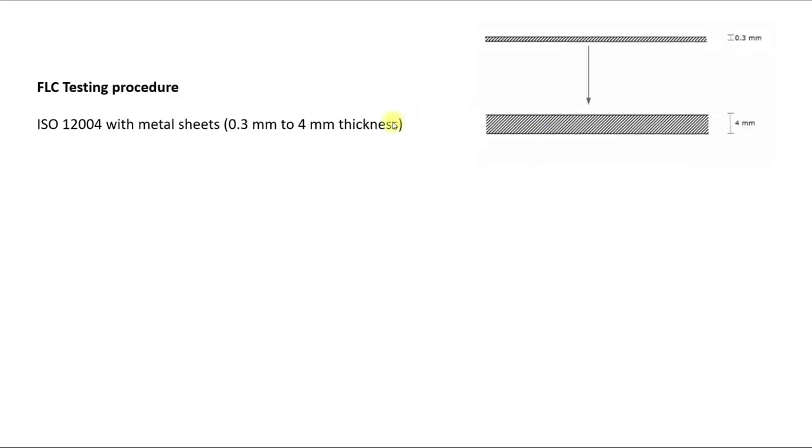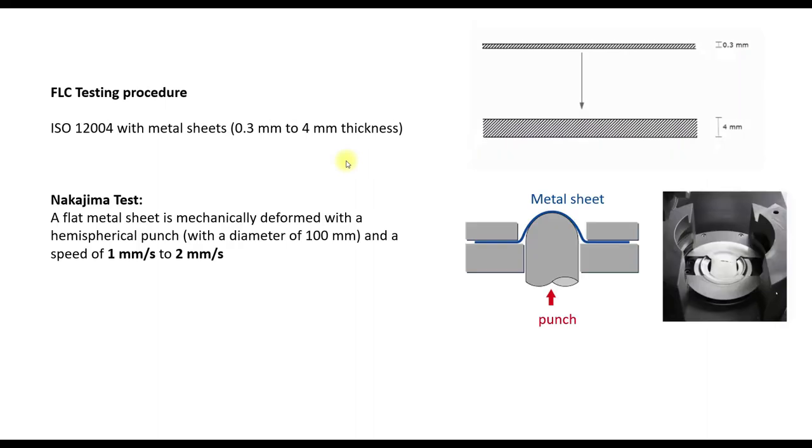How does the testing procedure work? There is in Germany an ISO 12004 and according to this ISO we use metal sheets with a thickness of 0.3 mm to 4 mm thickness. And then there is a certain test, the Nakajima test, where we put a flat metal sheet and deform it by a hemispherical punch from below.